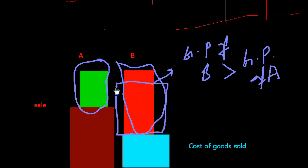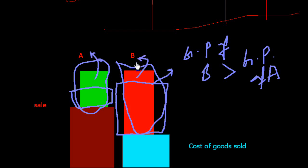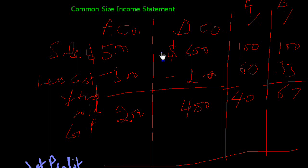Then we check other operating expenses. Suppose the operating expenses of B are higher, but the operating expenses of A are less, so the operating profit of A is good. This means its net profit is more due to decreasing operating and non-operating expenses. So this company has good purchase management and direct expenses management, which increases net profit. These are the points we should see in a common size income statement. Thank you very much.